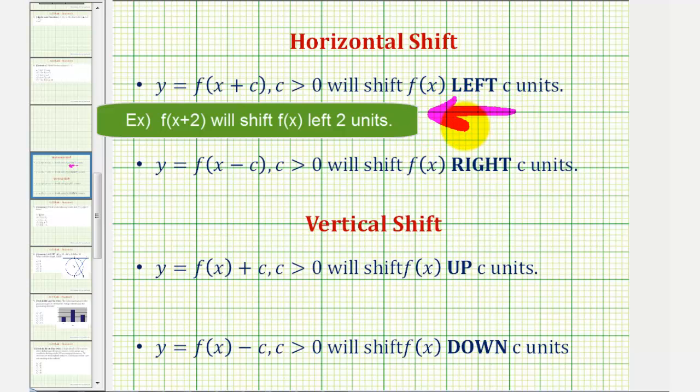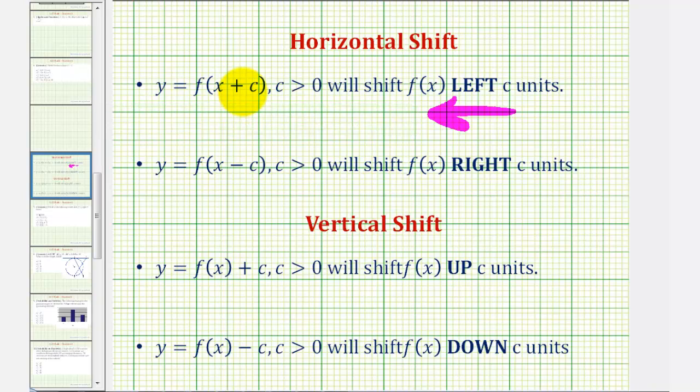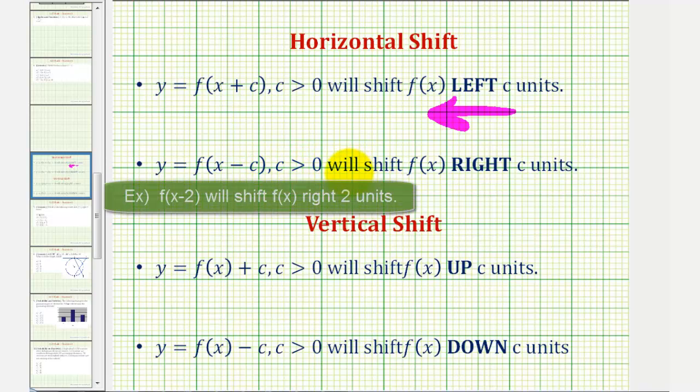And this is the opposite direction that we might think because we're adding a constant to the input x, and the graph is actually moving left. And if we have y equals f of the quantity x minus c, again, c is positive,